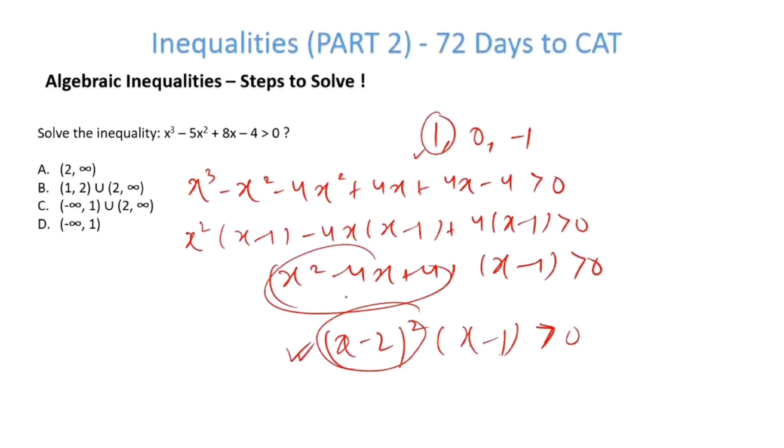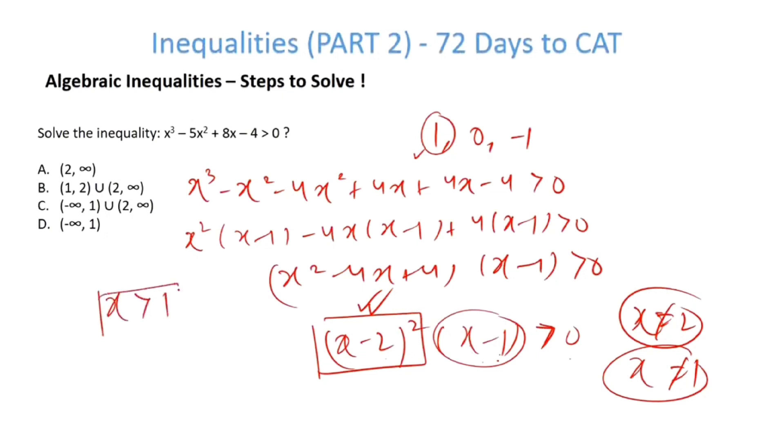In a problem like this, you don't even need a number line. See, you have to realize that x can't be equal to 2. If x becomes equal to 2, this will become equal to 0. Similarly, x can't be equal to 1. Now, x minus 2 whole square is always greater than 0. Which basically means that only x minus 1 determines the sign. So, therefore, x must be greater than 1 for this to be greater than 0. But it can't be 2. So, the answer is answer option B.